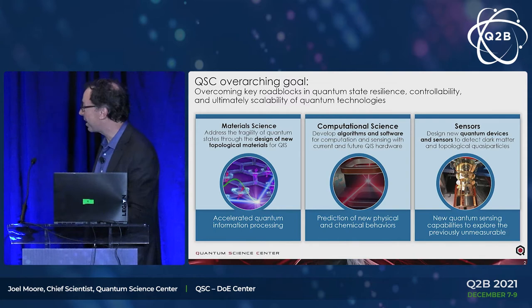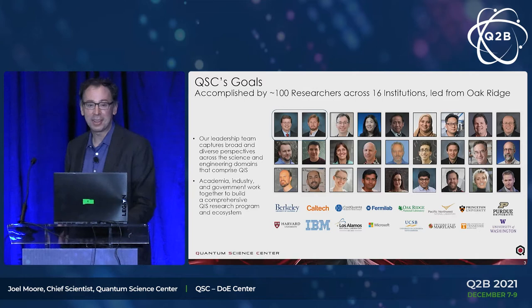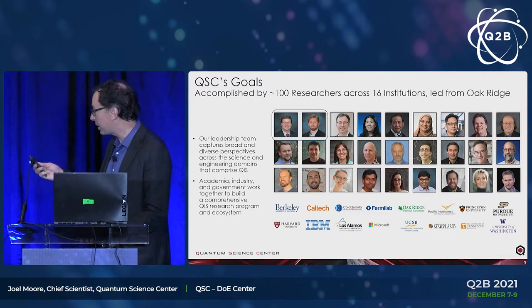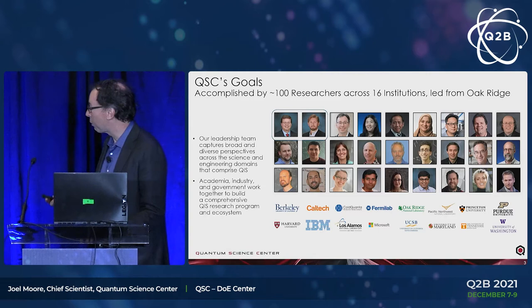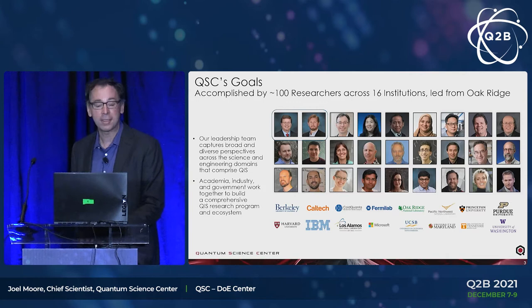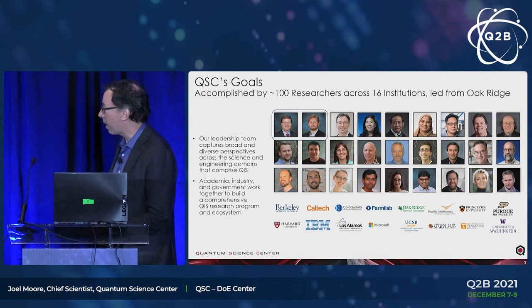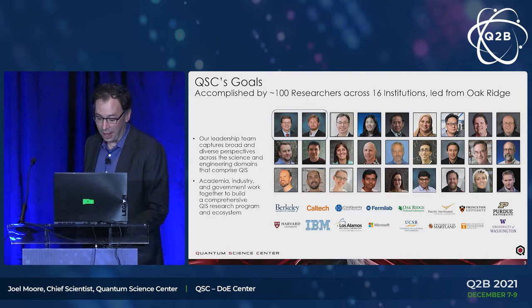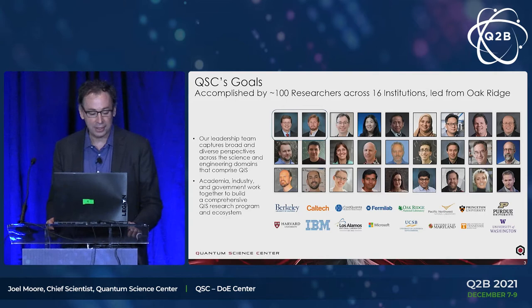Here's a small part of the team. We have a large and nationally spread group of people. In addition to the usual suspect university partners and four national labs — Oak Ridge, Los Alamos, Fermilab, and Pacific Northwest National Lab, which is one of the major software enterprises in DOE — we do have corporate partners ranging from startups up to places like Microsoft and IBM. This variety of partnerships is especially important for some of the computation challenges.